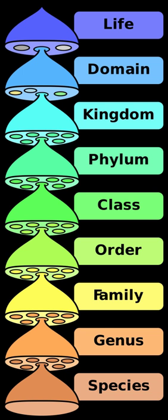Carolus Linnaeus used the word Familia in his Philosophia Botanica to denote major groups of plants: trees, herbs, ferns, palms, and so on. He used this term only in the morphological section of the book, discussing the vegetative and generative organs of plants.